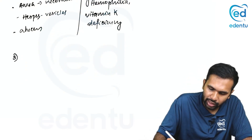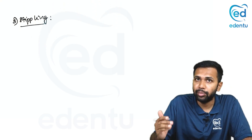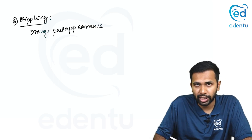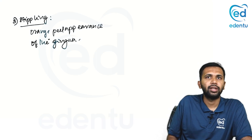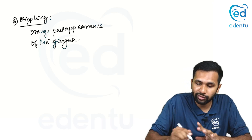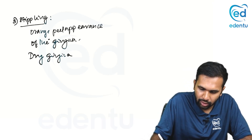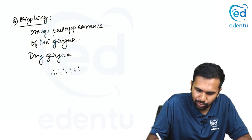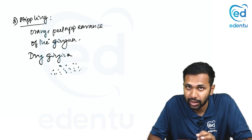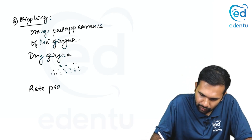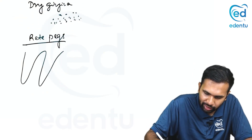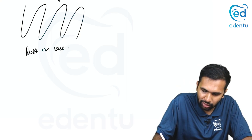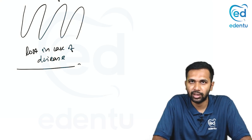The third and last point is stippling. Stippling is nothing but the orange peel appearance of the gingiva. You cannot see it by simply retracting the lips — you have to dry the gingiva. Take a cotton, wipe the gingiva, and observe it under natural light; then you can see the orange peel appearance. Stippling is due to the rete ridges connecting the epithelium and the connective tissue, creating elevations and depressions. This stippling is lost in case of disease or gingivitis.